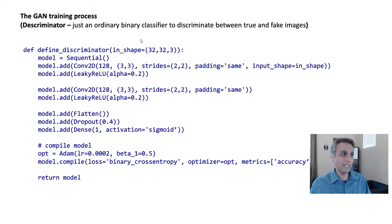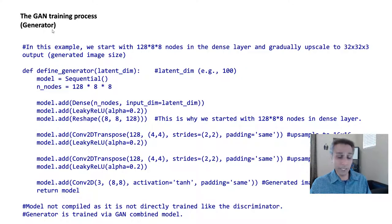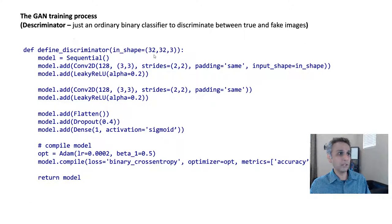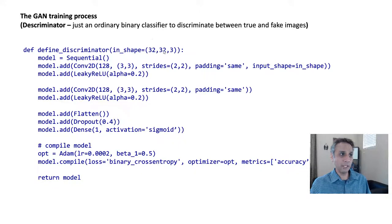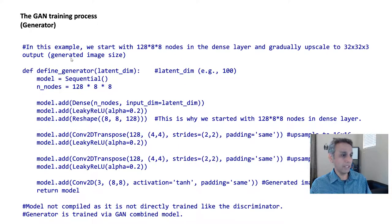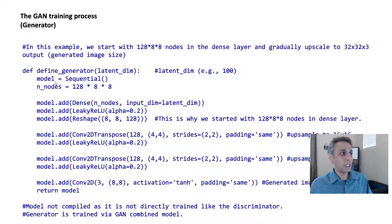For the generator, the final layer must output an image of the correct size. Since the discriminator input shape is 32x32x3, both real and fake images must be 32x32x3. That means the generator's last layer must be designed to produce a 32x32x3 output, and everything else is built around achieving that size.